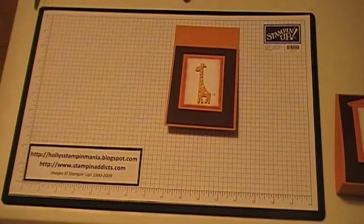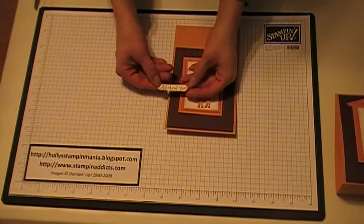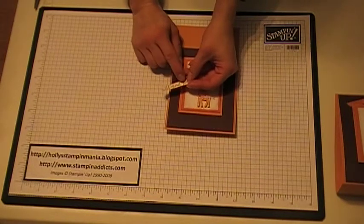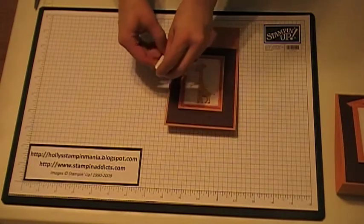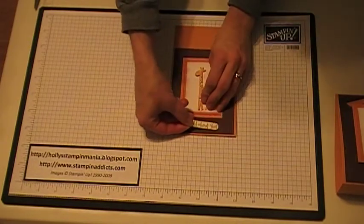And then the next thing I did was I stamped Wild About You in chocolate chip on some whisper white. I punched it out with the word window punch. I sponged it with some more mustard ink and then I put dimensionals on the back of that and then you're just going to place that down here at the bottom.